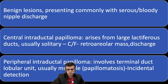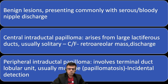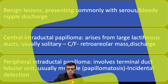Central intraductal papilloma manifests as a retroareolar mass and often presents with bloody nipple discharge. Peripheral intraductal papillomas, on the other hand, are multiple and are called papillomatosis. The terminal ductal lobular unit (TDLU) is involved, and generally it is an incidental diagnosis without any discharge or any mass.